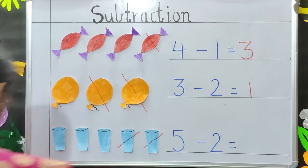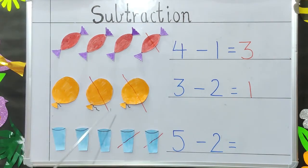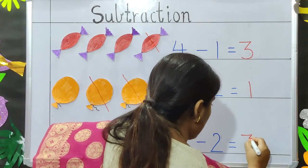Found it, children? Yes, it will be 1, 2 and 3. So, 5 minus 2 will be 3. So, you will write 3 here.